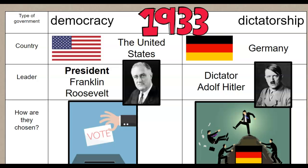Hitler came to power making promises that Germany would see better times. These people, desperate for change, started to follow this man who — we will find out later — was completely dangerous and made some of the most murderous decisions that history has ever seen. At the time, of course, the people did not know where things were headed, but they were excited about having an improved economy, protection, and a stronger military. All these promises sounded good to the majority of Germans.